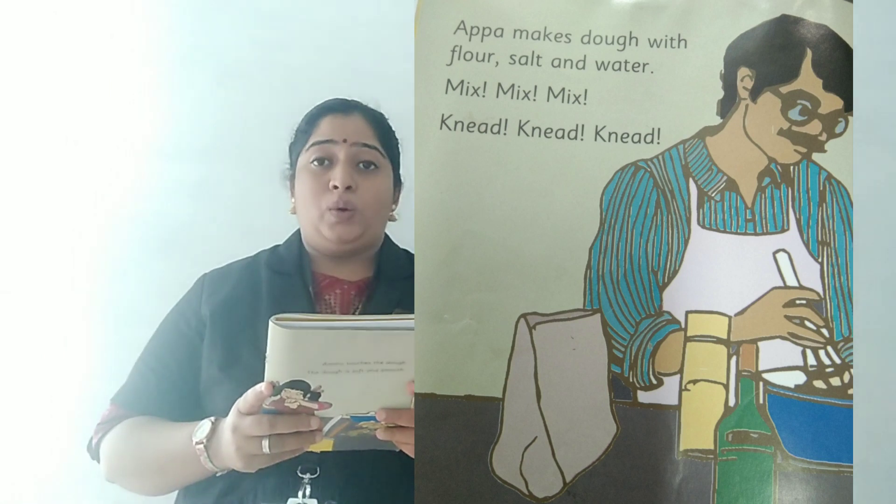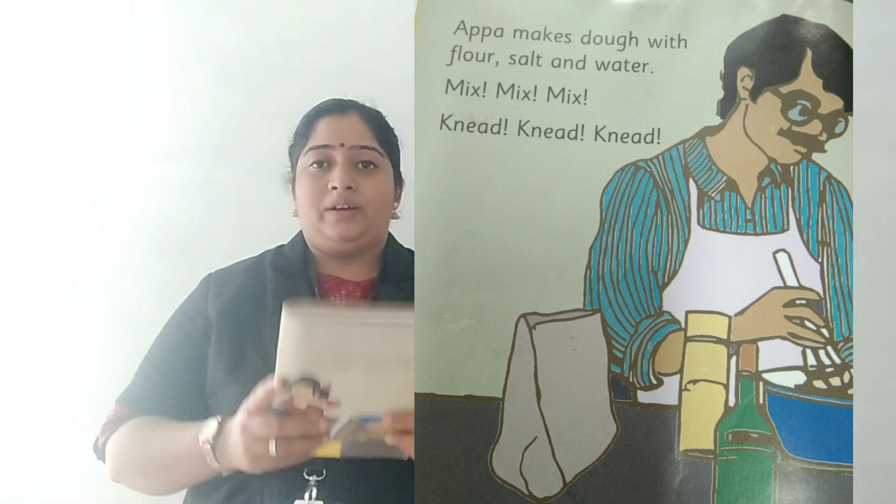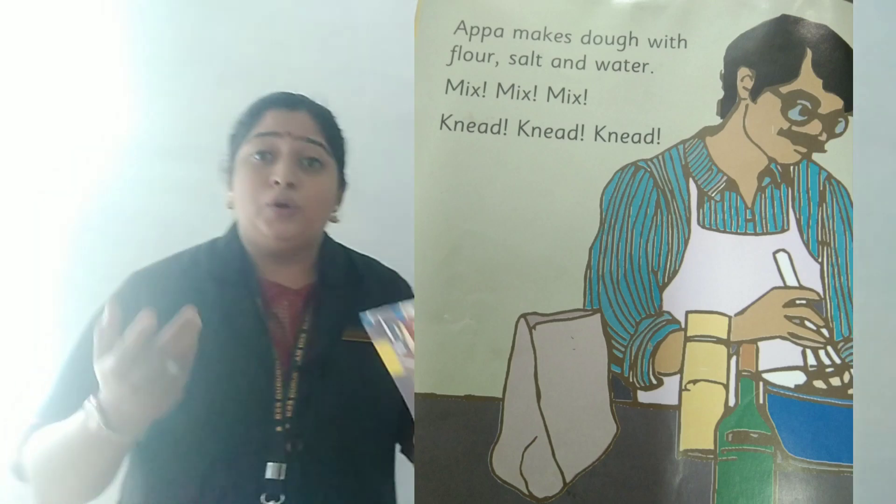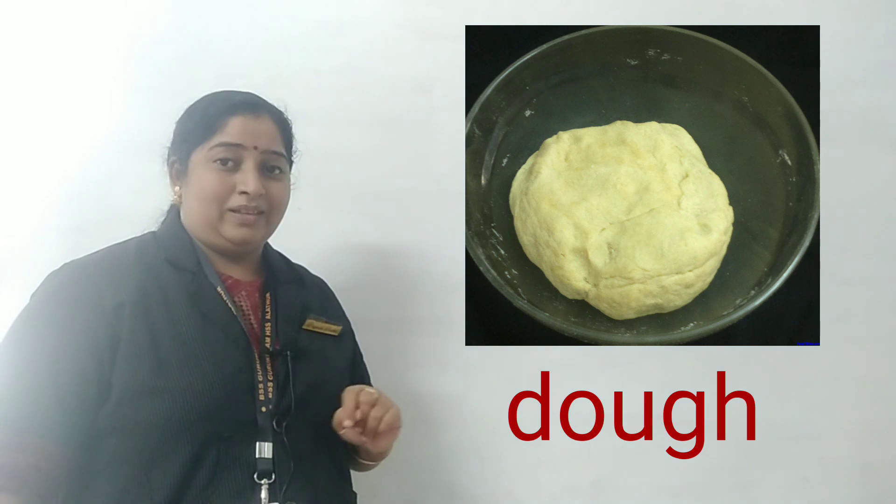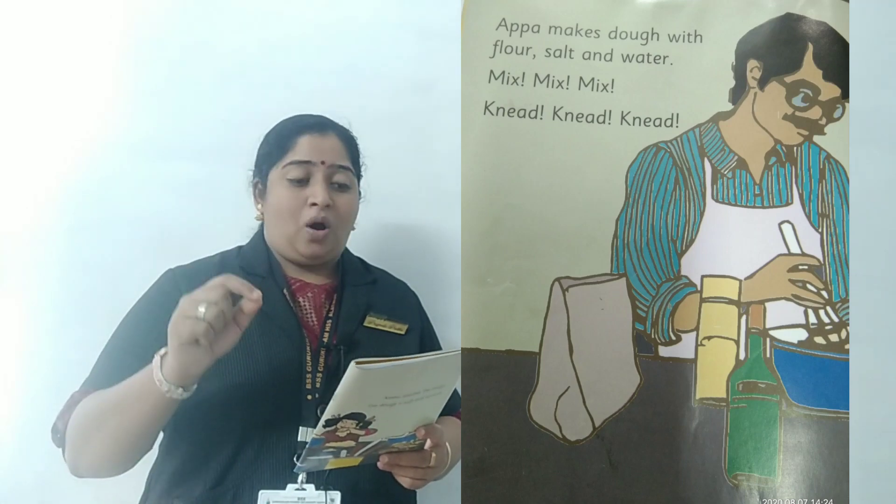Appa makes dough with flour, salt and water. Where do you see this dough? What is dough? Your mother makes chapati at home. How is she making that chapati? With wheat flour. When she is preparing, she will use water and salt, and that will become dough. You can see the picture of dough. This is the way your mother prepares the dough for chapati. Appa makes dough with flour, salt and water — mix, mix, mix, knead, knead, knead.